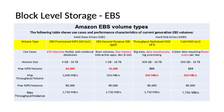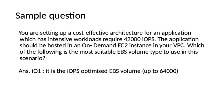Sample question: You are setting up a cost-effective architecture for an application which has intensive workloads requiring 42,000 IOPS. The application should be hosted on an on-demand EC2 instance in your VPC. Which of the following is the most suitable EBS volume type? The answer is IO1, because it is the IOPS optimized EBS volume and it can give up to 64,000 IOPS per volume. You can expect similar questions in your exam.